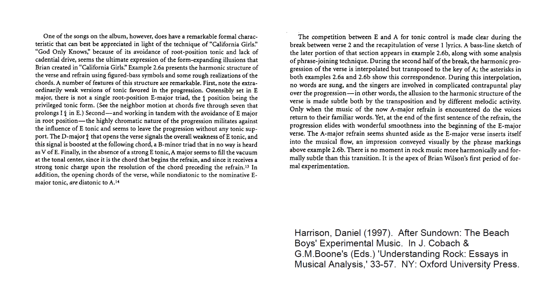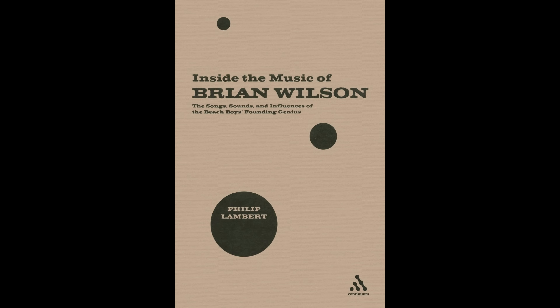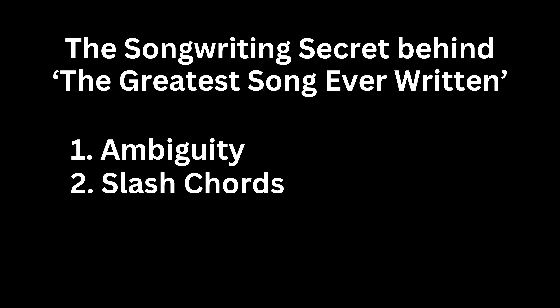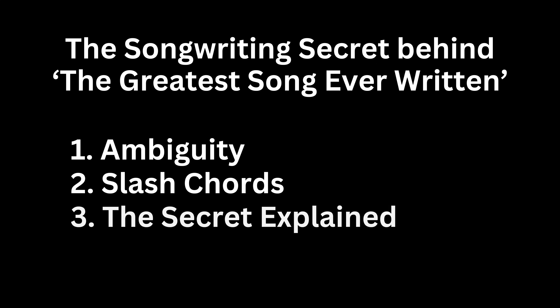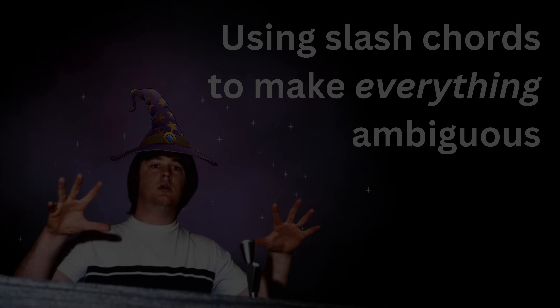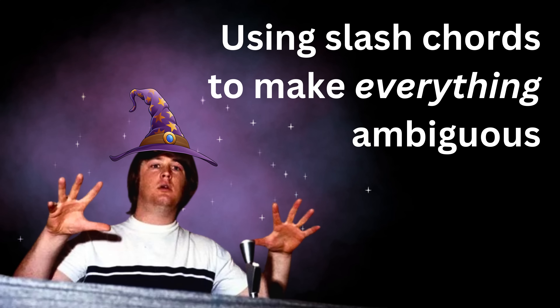Harrison talks about a vacuum at the tonal centre, meaning no one knows what key this is actually in. He talks about a competition for tonic control between the key of E and A, and Lambert states that a clear sense of key eludes the listener for the entire experience, and that the idea of key has itself been challenged and subverted. So now at last we bring both halves of the puzzle together. Having looked at ambiguity and slash chords, we're now going to look at how Brian Wilson used slash chords to create ambiguity not just on one single chord but on almost every single chord, the melody, and the key throughout that entire song.